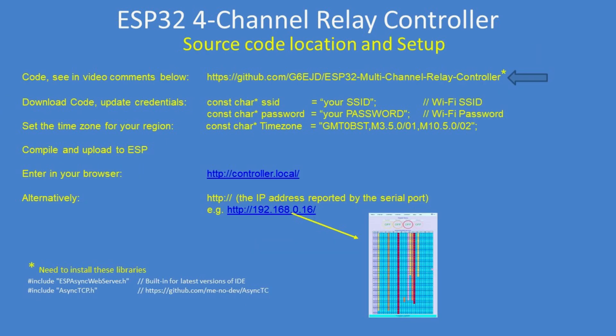To get the system running, download the source code from GitHub — the link is in the video description. Update your credentials for your Wi-Fi SSID and password. Adjust your time zone — examples are given in the source code. Then enter in your browser controller.local or the IP address, whichever suits you if your browser doesn't support mDNS domain name services.